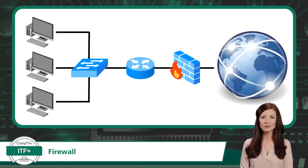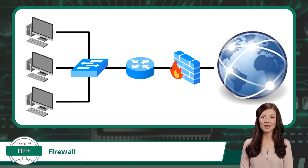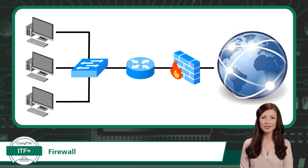How does a network firewall work? It examines each data packet that tries to pass through it, inspecting its source address, destination address, and content. It compares this information against a set of predefined security rules and policies. If a data packet matches the allowed criteria, it's permitted to pass through and continue towards its destination. However, if a data packet violates any of the security rules, the firewall blocks it from entering or leaving the network.